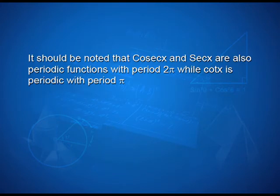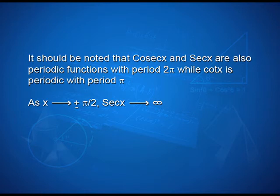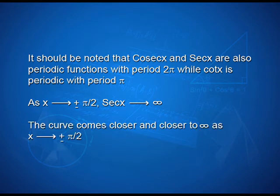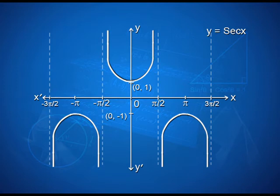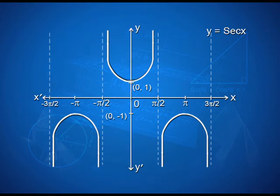It should be noted that cosec x and sec x are also periodic functions with period 2 pi, while cot x is periodic with period pi. As x tends to ±pi/2, sec x tends to infinity, so the curve comes closer and closer to infinity. The graph of y = sec x can be drawn with x'Ox as the x-axis and yOy' as the y-axis, showing how the graph decreases and increases between 0 and pi/2, and similarly for the interval −3pi/2 to −pi/2.